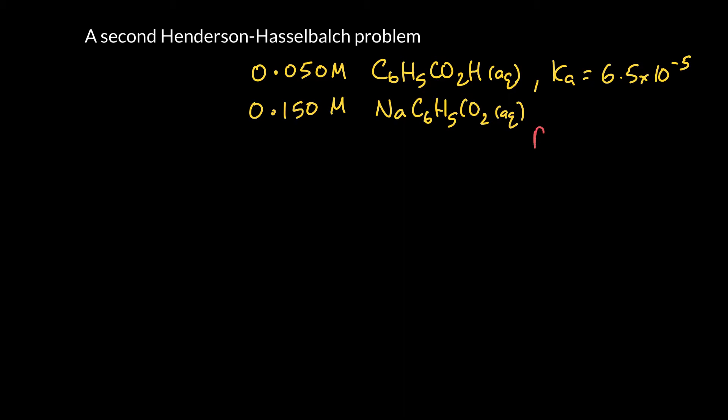So how would we do this using Henderson-Hasselbalch? Well, one of the things we need is the pKa, and the pKa is the negative log of the Ka. And if we take the negative log of 6.5 times 10 to the minus 5, we get 4.19.